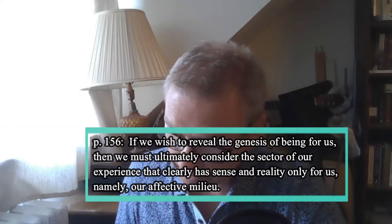Merleau-Ponty links the story of sexuality to the theme of affective life. On page 157 he says: if we're going to reveal the genesis of being for us, we must ultimately consider the sector of our experience that clearly has sense in reality only for us — namely our affective milieu. He raises the theme of affectivity or emotion right off the bat when talking about sexuality. In that habitual world we inhabit non-reflectively — the presupposed and generally inconspicuous background and platform for our ego life — that world is not a neutral world.